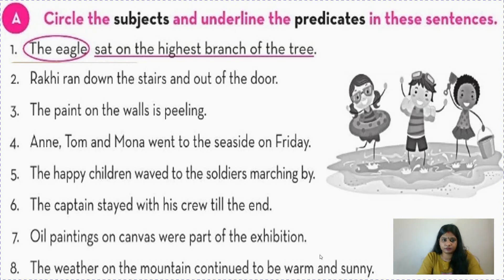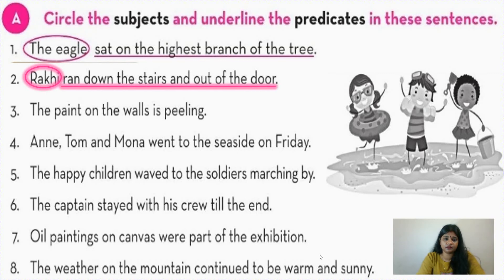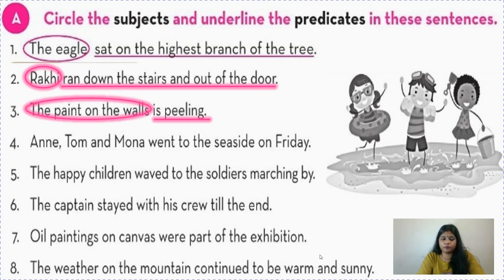Now let us do the book exercise. You have to circle the subjects and underline the predicates. Number one is already done: 'The eagle sat on the highest branch of the tree' — we are talking about 'the eagle,' so it is circled as subject, and the rest is underlined as predicate. Number two: 'Rakhi ran down the stairs' — we are talking about 'Rakhi,' so that is subject. Number three: 'The paint on the walls is peeling' — the subject is 'the paint on the walls,' not just 'paint.'